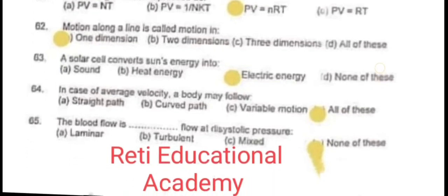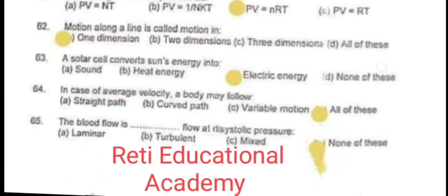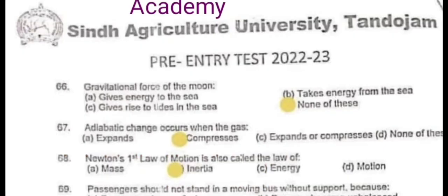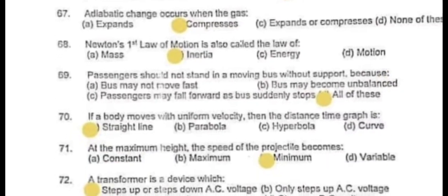Question 62: Motion along a line is called motion in one dimension. Question 63: A solar sail converts the sun's energy into electric energy. Question 64: In case of average velocity, a body may follow all of these – straight path, curved path, or variable motion. Question 65: The blood flow at diastolic pressure is none of these. Question 66: Gravitational force of the moon is none of these. Question 67: Adiabatic change occurs when a gas is compressed. Question 68: Newton's first law of motion is also called the law of inertia. Question 69: Passengers should not stand in a moving bus without support because of all of these reasons – bus may not move fast, bus may become unbalanced, passengers may fall forward if bus suddenly stops.